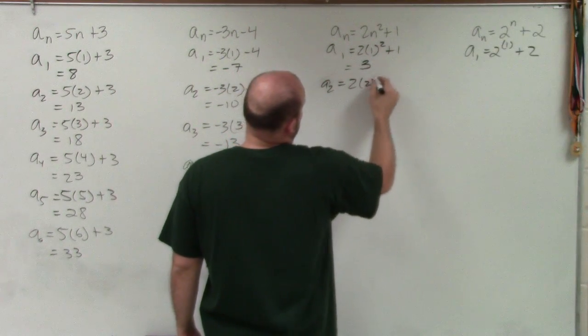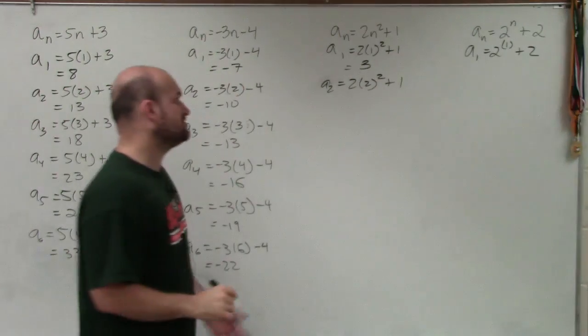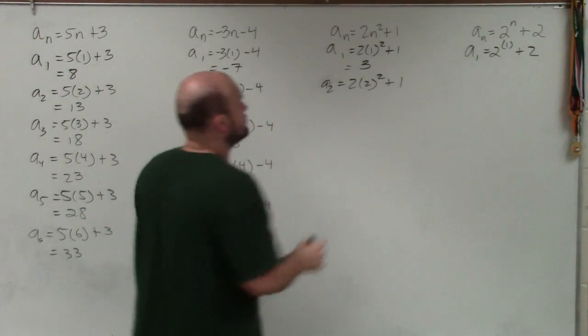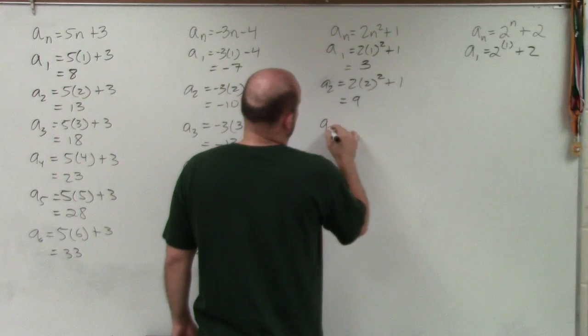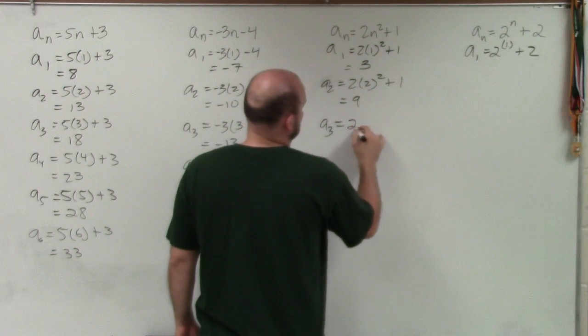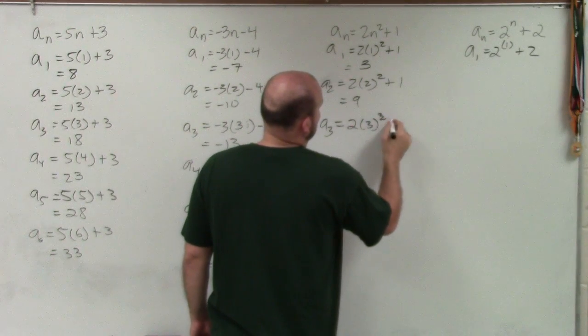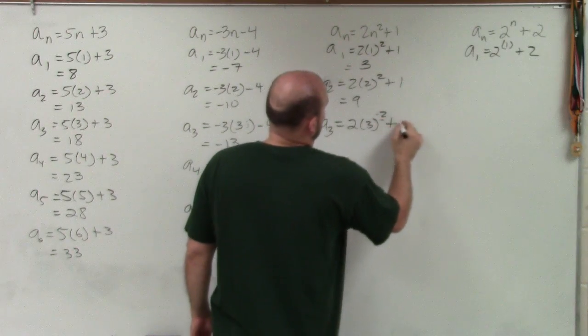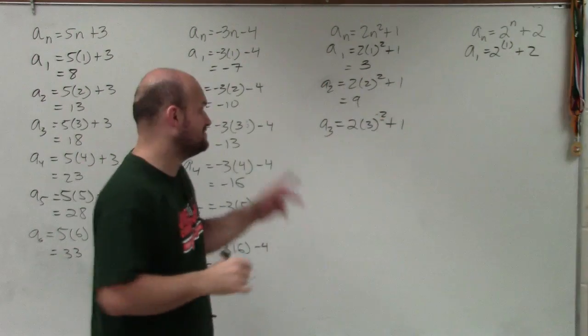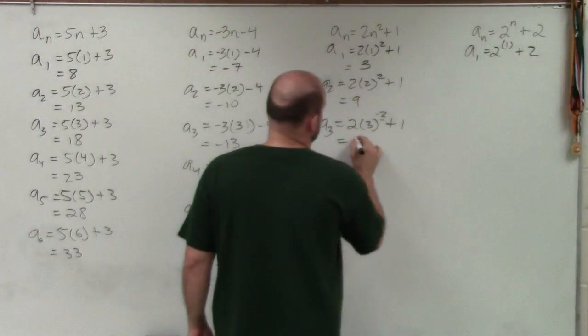A sub 2 equals 2 times 2 squared plus 1. 2 squared is 4. 4 times 2 is 8 plus 1 is 9. A sub 3 equals 2 times 3 squared plus 1. 3 squared is 9 times 2 is 18 plus 1 is 19.